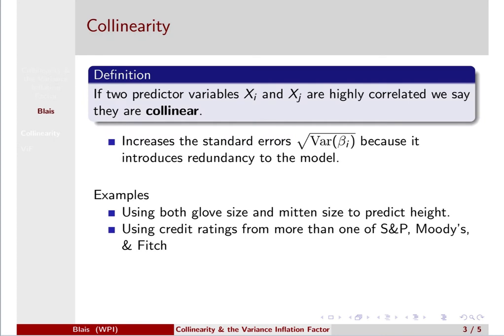Well, this is where we get into this idea of collinearity. So we say if two predictor variables, Xi and Xj, are highly correlated, we call them collinear. And the issue is that this increases the standard error as measured by the standard deviation of the beta i-hat, so the estimator that we get for a coefficient of one of these variables, because it introduces redundancy to the model.